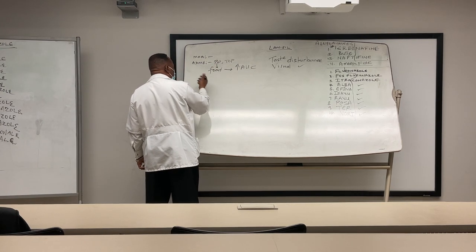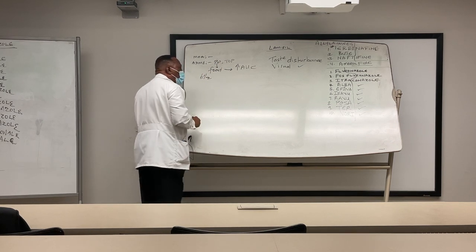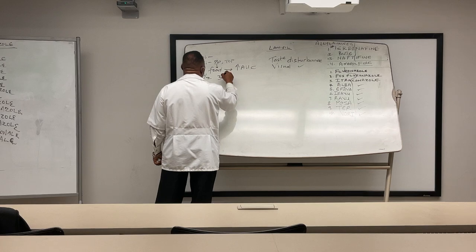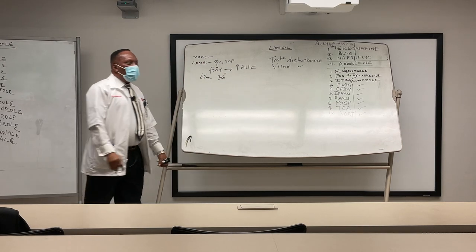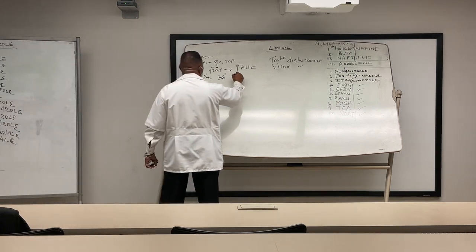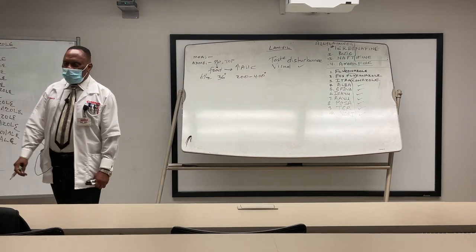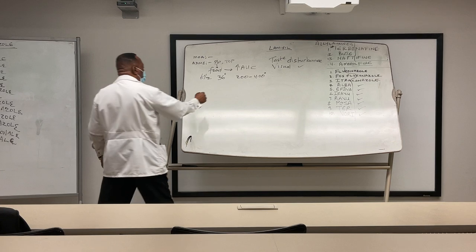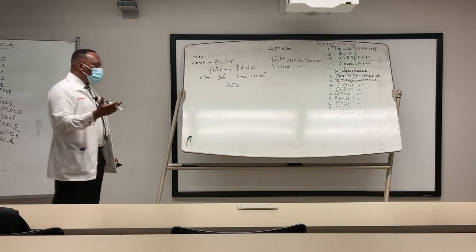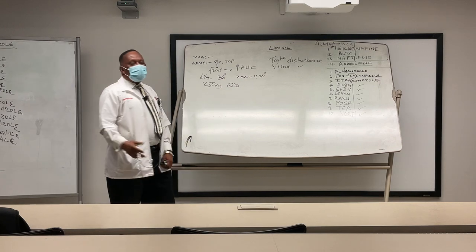The half-life for Lamisil is biphasic. You have an initial half-life of about 36 hours, and then a terminal half-life of up to 200 to 400 hours. That explains the once-daily administration of Lamisil. The usual dosage is 250 milligrams PO once daily.